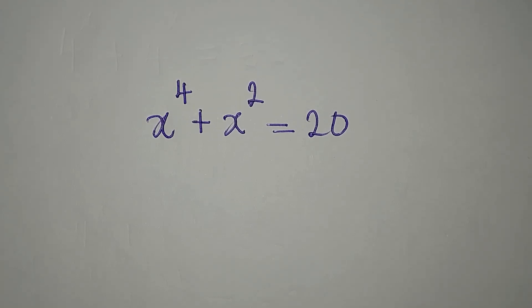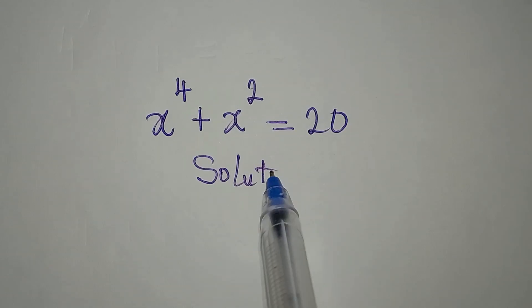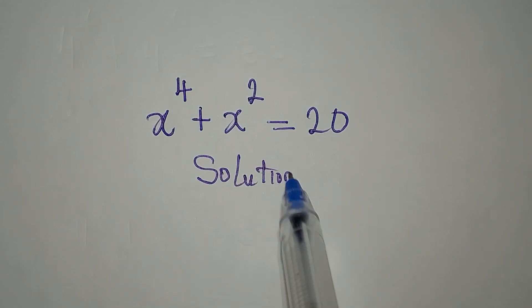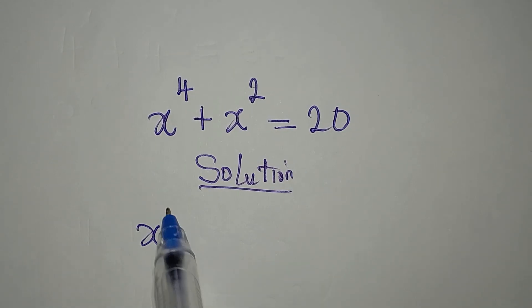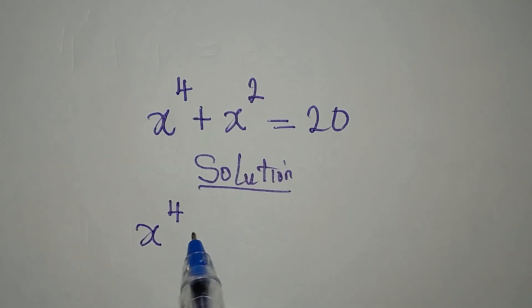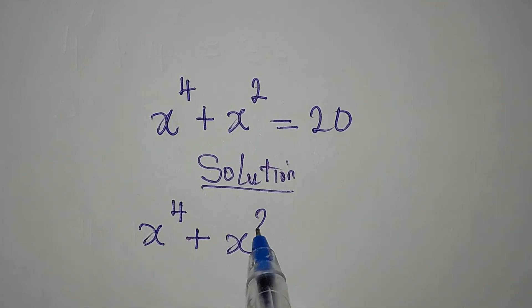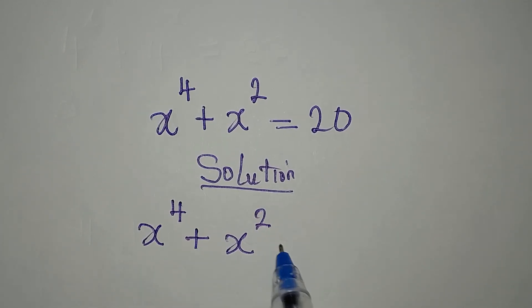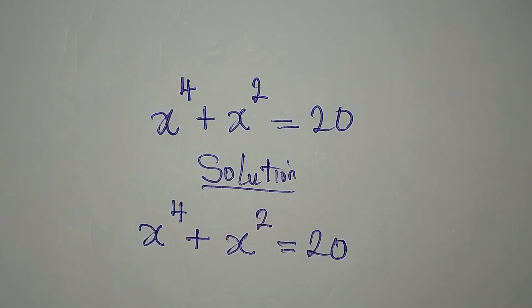Hi everyone. I want us to provide the solution to this problem in detail. This is x to the power of 4 plus x to the power of 2 equals 20. Now, how do we solve this?